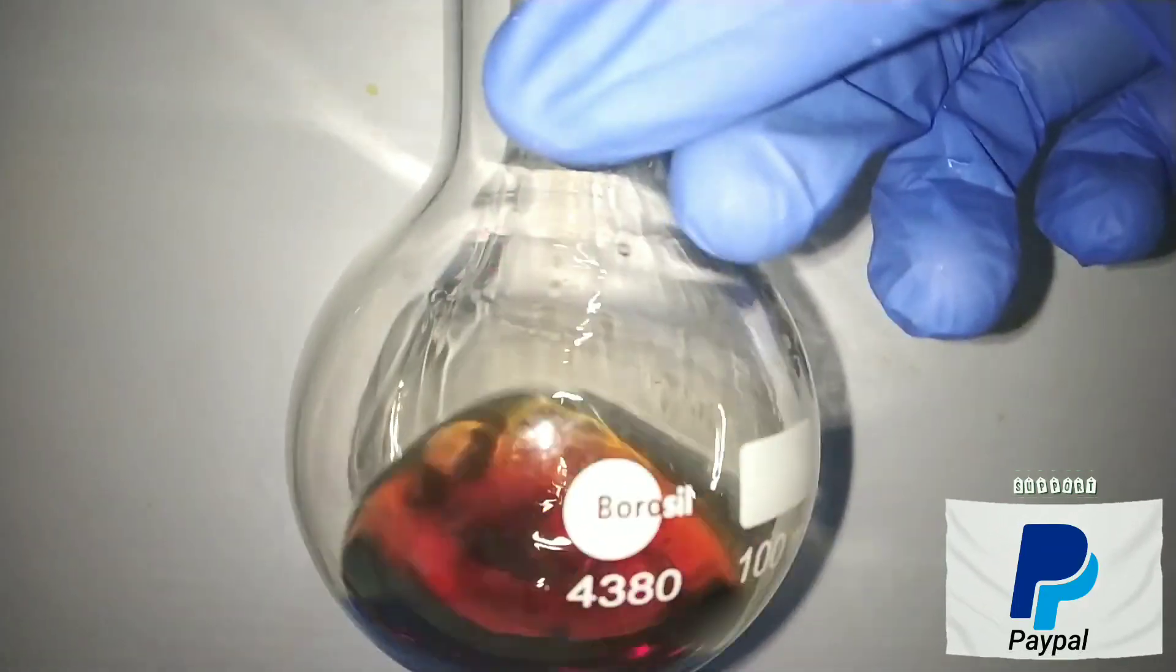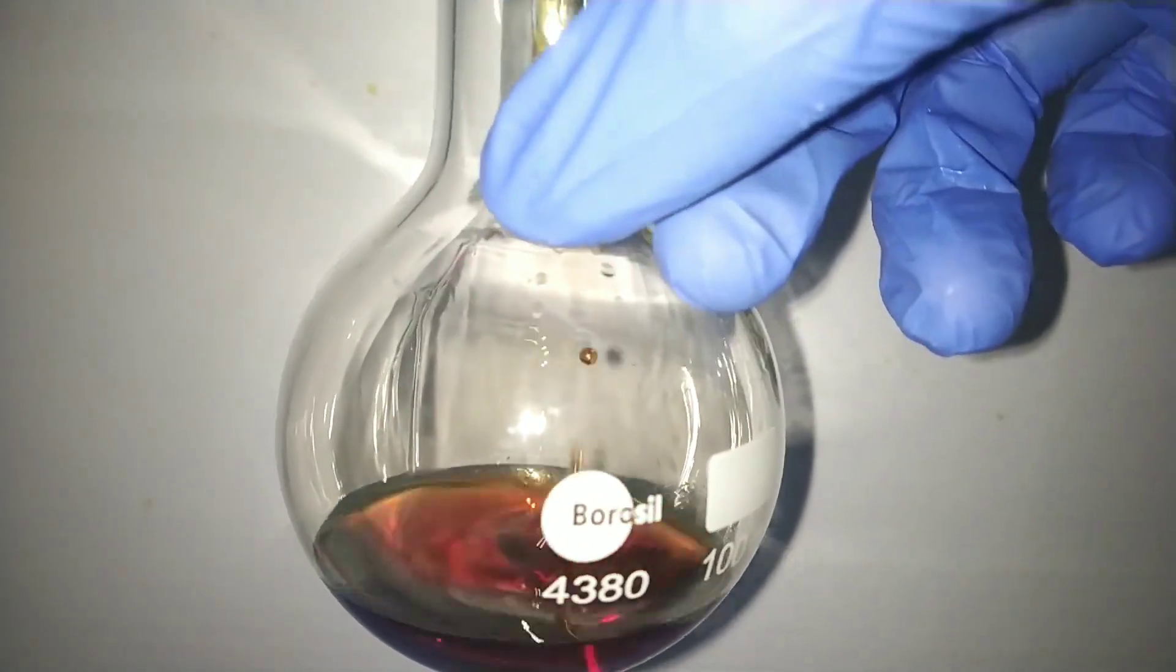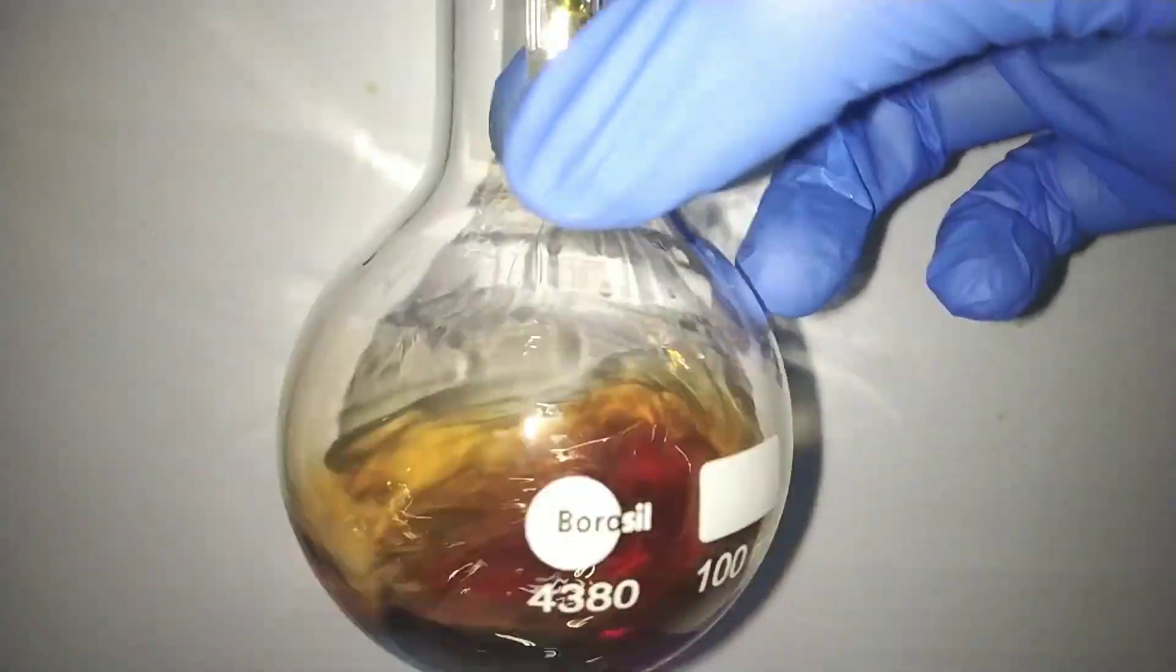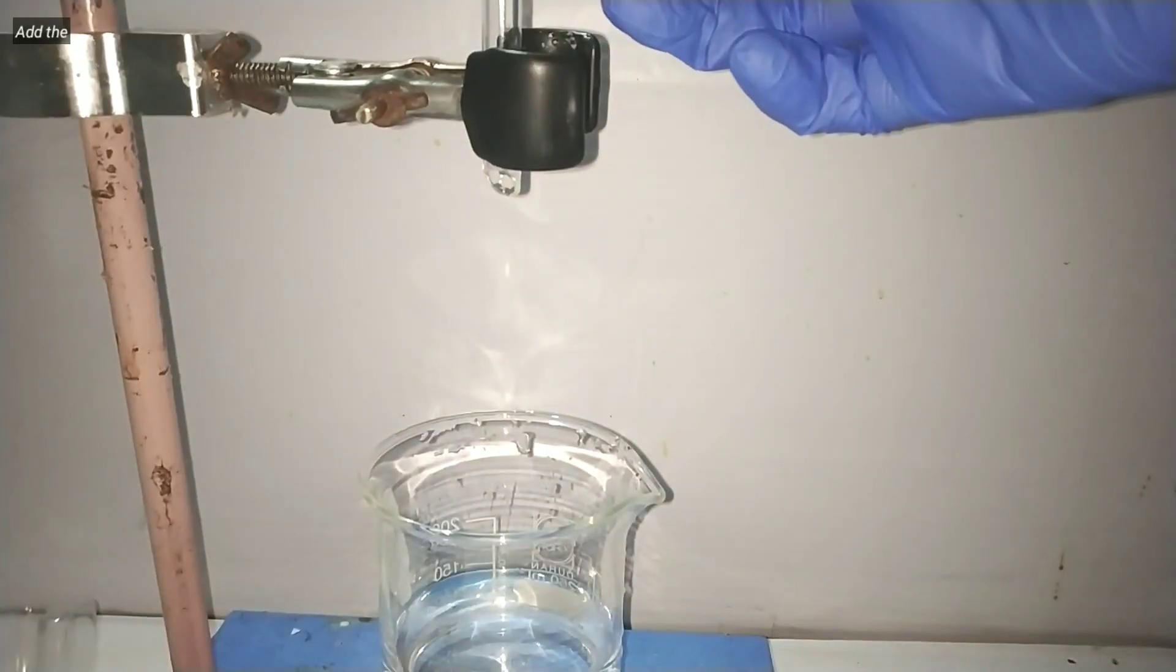After complete addition of the brominating agent the crude precipitate immediately separates out. But in my case the product remained dissolved in alcohol.